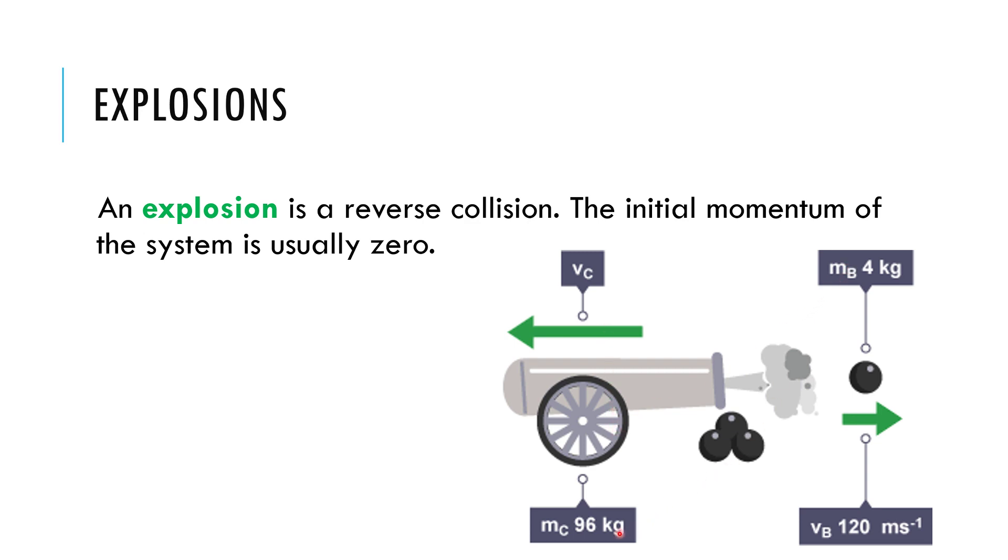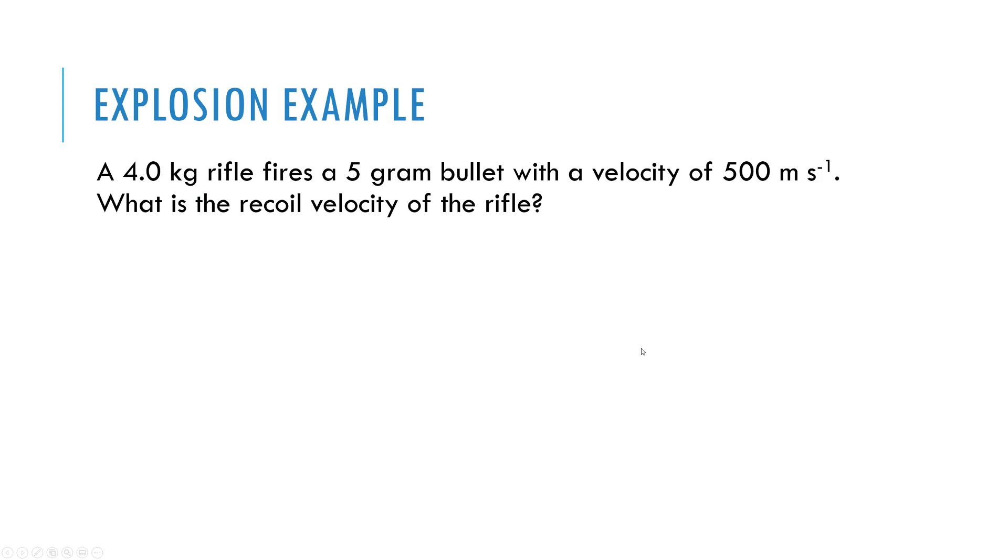And of course, because it has a much larger mass, it won't have nearly as high a speed, but it will recoil with some speed backwards. That's why they put wheels on these old cannons.